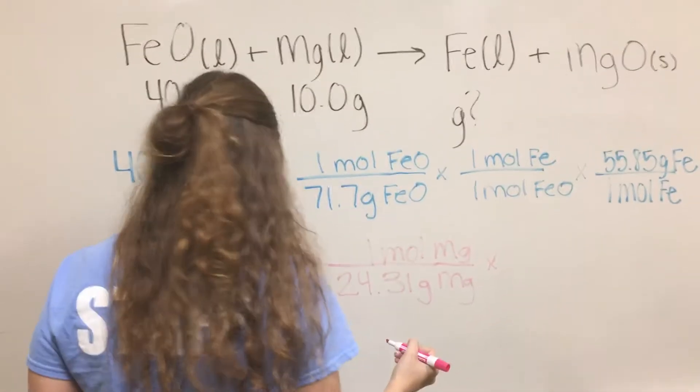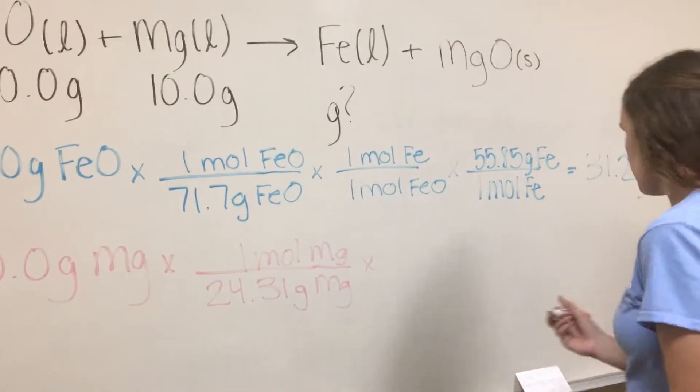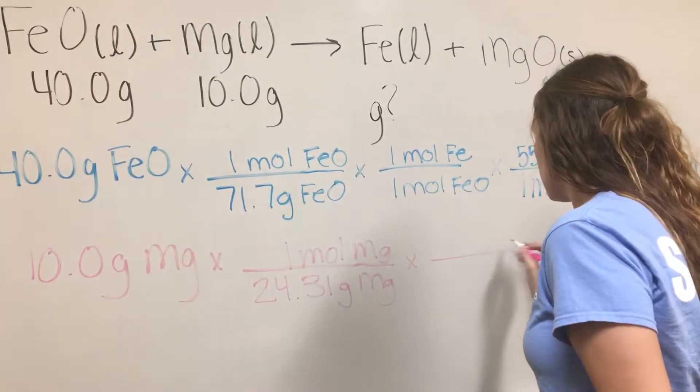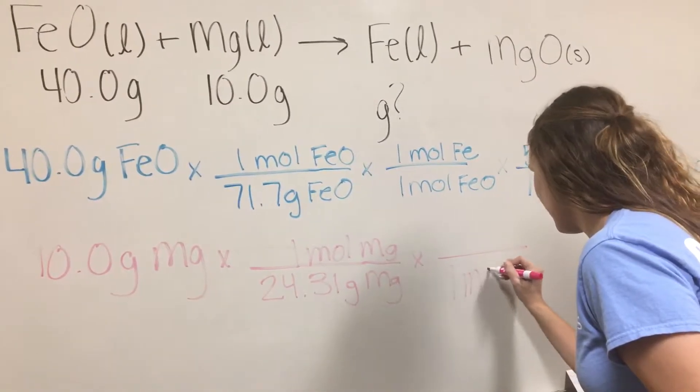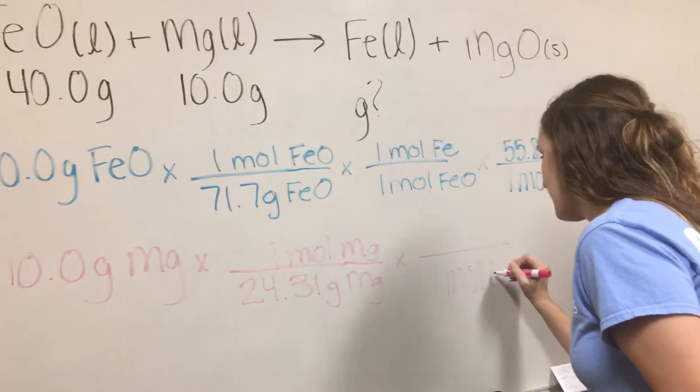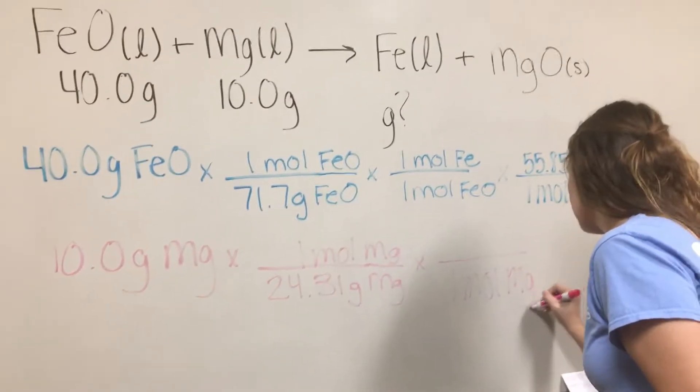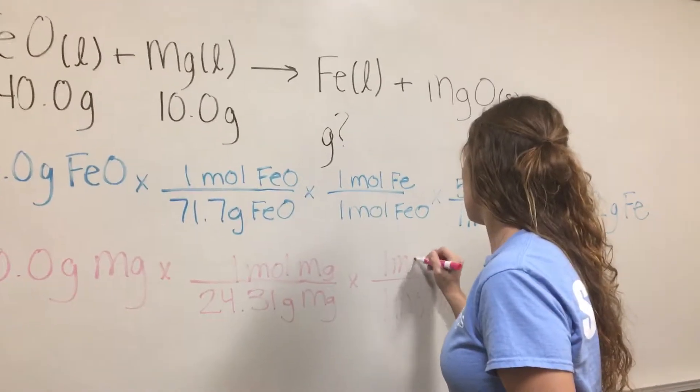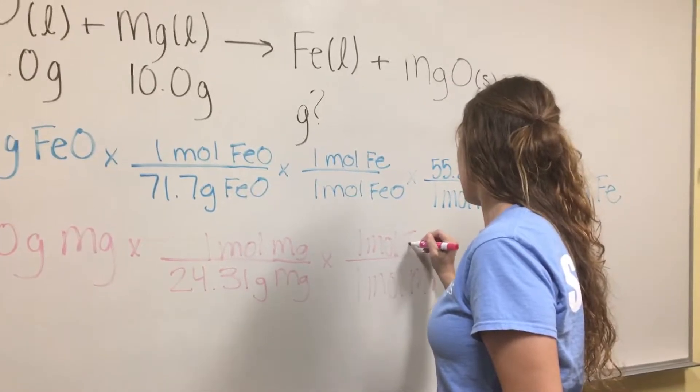From there, we're going to find the molar ratio, which is 1 mole of Mg to 1 mole of iron.